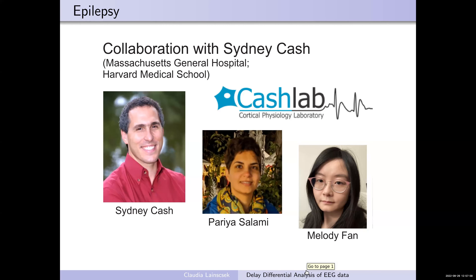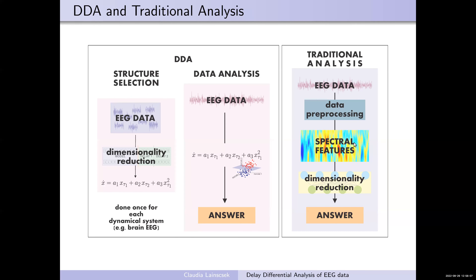For the epilepsy data, I don't have a high-dimensional feature space and I don't need dimensionality reduction — I already have low dimensionality. With structure selection I select the model that best fits the data. Instead of throwing out information later, I throw it out before I put in the data. The delays are different for epilepsy versus sleep data, Parkinson's, or schizophrenia, so the delays are really task-specific.